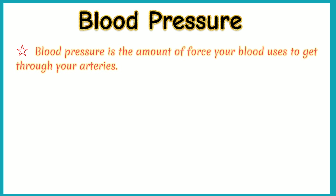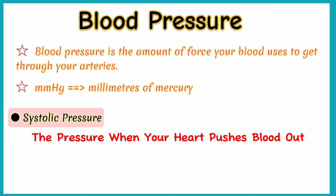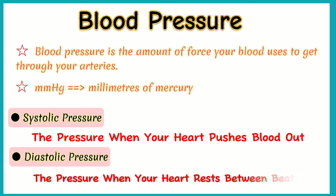Blood pressure is the amount of force your blood uses to get through your arteries. It is measured in millimeters of mercury and is given as two figures. Number one, systolic pressure — the pressure when your heart pushes blood out. And the second is the diastolic pressure — the pressure when your heart rests between beats. The instrument used to measure blood pressure is called a sphygmomanometer.